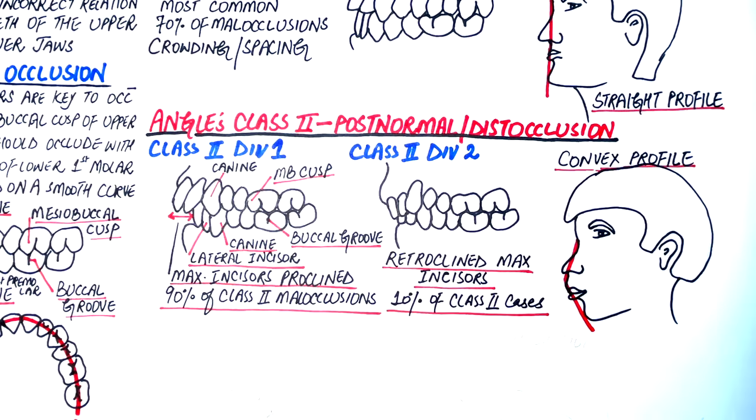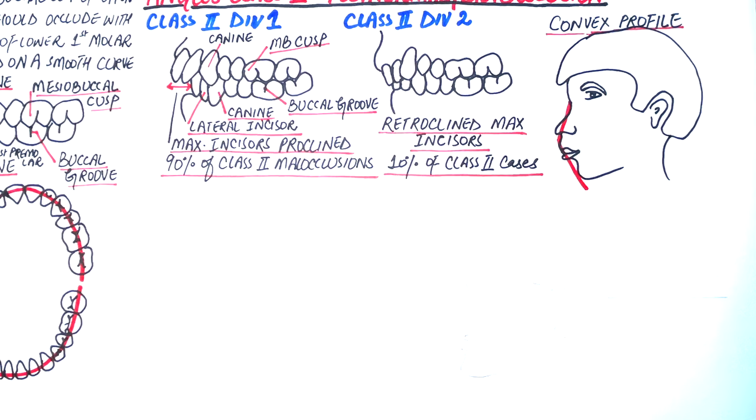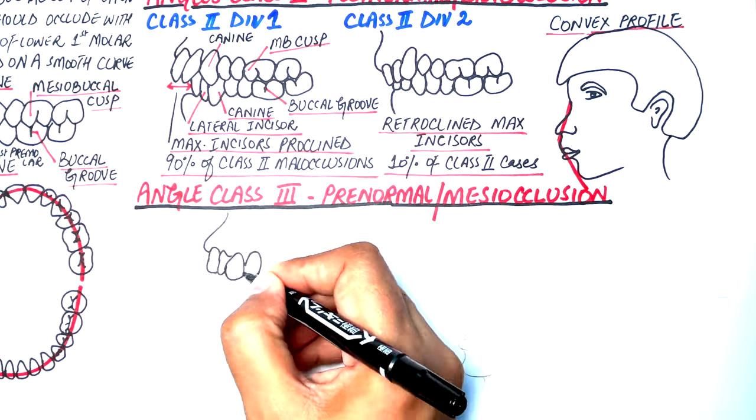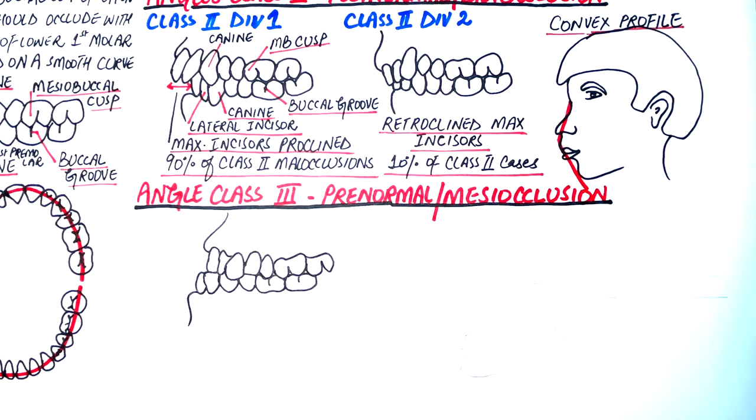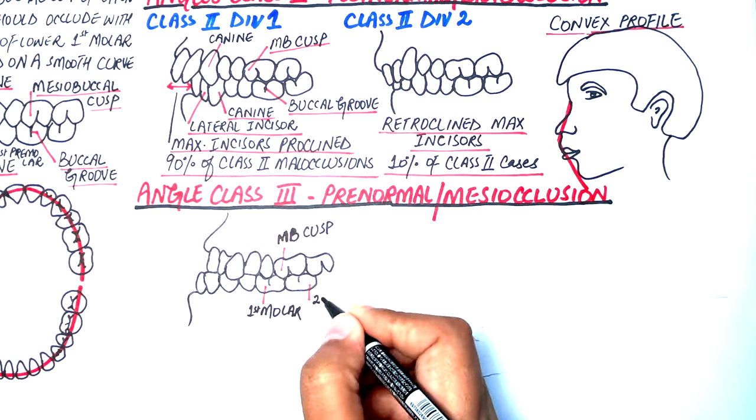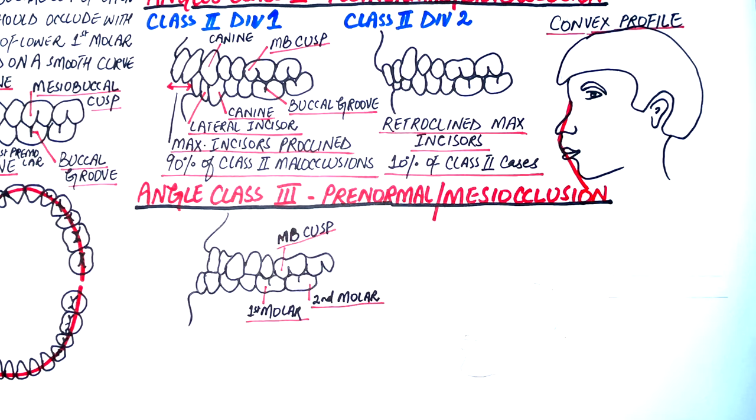In Angle Class 3 malocclusion, known as pre-normal or mesiocclusion, the mesiobuccal cusp of the upper first molar is posterior to the mandibular first molar's mesiobuccal groove. Or let's just say the mesiobuccal cusp of the maxillary first molar lies in the occlusal embrasure of the lower first and second molar.